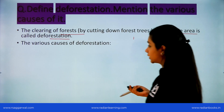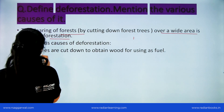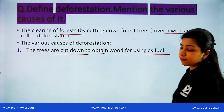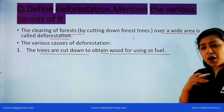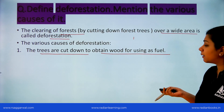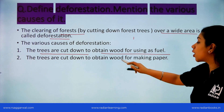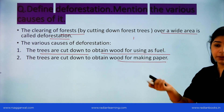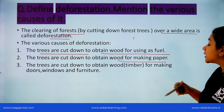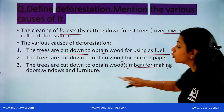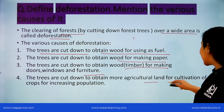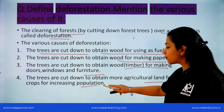The various causes of deforestation are: First, trees are cut down to obtain wood for use as fuel. Second, they are cut to obtain wood for making paper — the paper in which your books are written. Third, trees are cut down to obtain wood for making doors, windows, and furniture. Trees are also cut down to obtain more agricultural land for cultivation of crops to feed an increasing population.